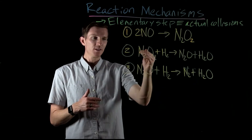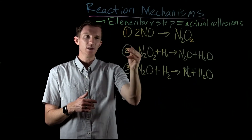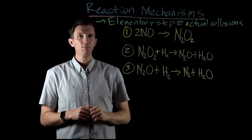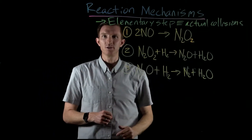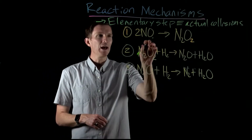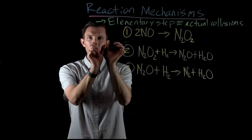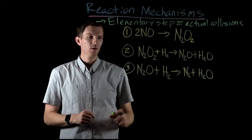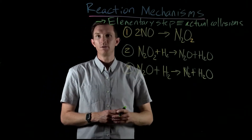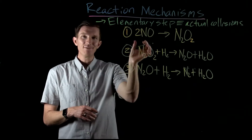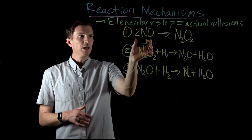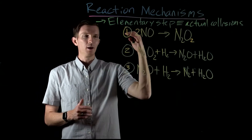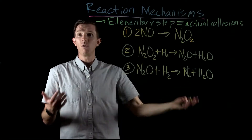These elementary steps — I have three individual mechanistic steps here — they are called elementary. What an elementary step means is that they represent actual collisions. So this is telling me that I have a molecule of NO colliding with another molecule of NO, or N2O2 colliding with a molecule of H2, or N2O colliding with another molecule of H2. These are individual collisions that are built up to give us our overall reaction.